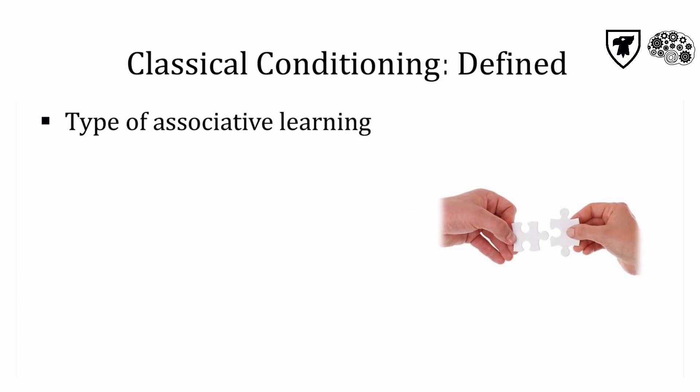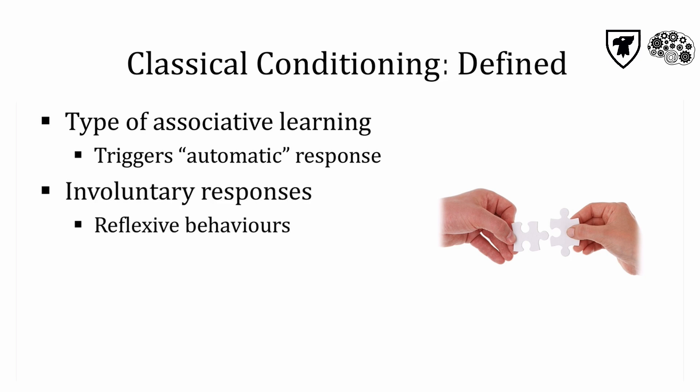Classical conditioning is one type of associative learning where an individual makes a connection between two different stimuli or events. More specifically, classical conditioning occurs when a neutral stimulus becomes associated with a meaningful one — something that triggers an automatic response. The types of behaviors involved are involuntary responses, which psychologists often refer to as reflexive behaviors.